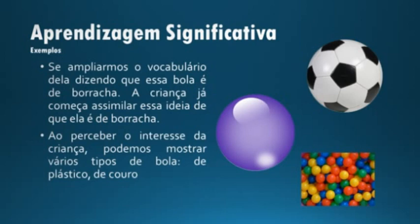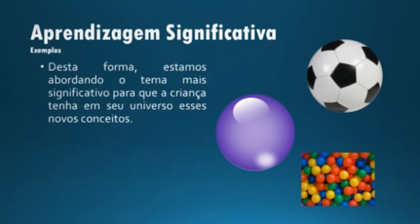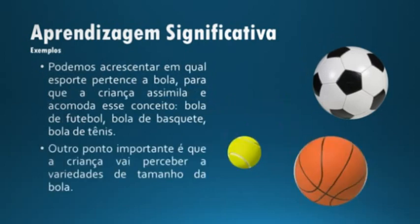Ao perceber o interesse da criança, podemos mostrar vários tipos de bola: de plástico, de couro. Desta forma, estamos abordando o tema de maneira mais significativa para que a criança tenha em seu universo esses novos conceitos. Podemos acrescentar em qual esporte pertence cada bola, para que a criança assimile e acomode esse conceito: bola de futebol, bola de basquete, bola de tênis.